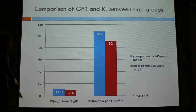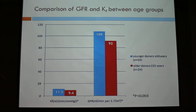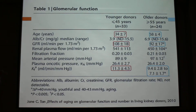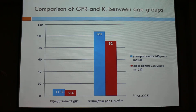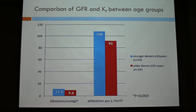We made a bar graph to compare more easily — a comparison of GFR and KF between each group. The blue one is the younger donors and the red one is the older ones. KF: 11.3 versus 9.4 — you can see the star above indicating a significant difference between the two groups. I know this does not look very different, but it still is. The GFR: 108 versus 92, and there was also a significant difference in GFR between the two groups.